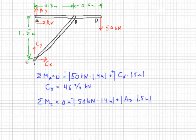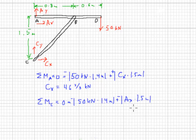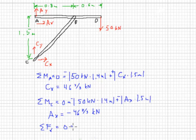Now, taking moments about point C: CX, CY, and AY all go through point C, so they're multiplied by zero. AX does not go through point C, so assuming it goes to the right, it produces a clockwise rotation, making it negative. We'll find out later that AX actually goes to the left. As a check, summing forces in the X direction must equal zero. The only forces are AX and CX, and as we can see, they add up to zero.